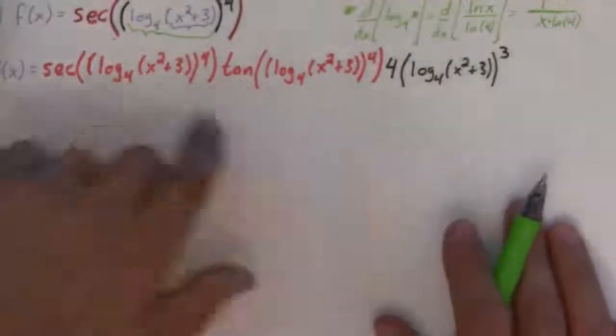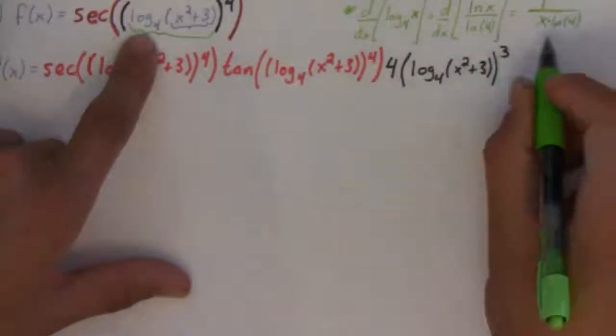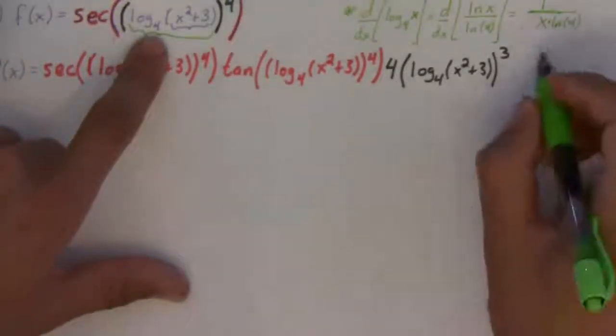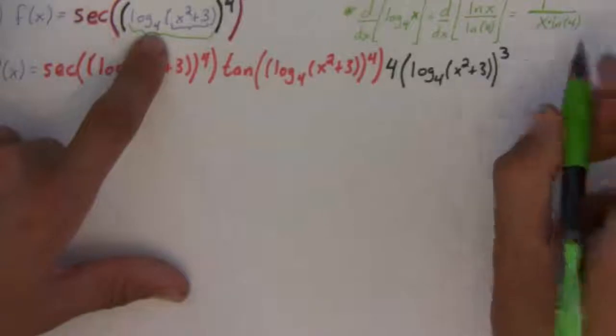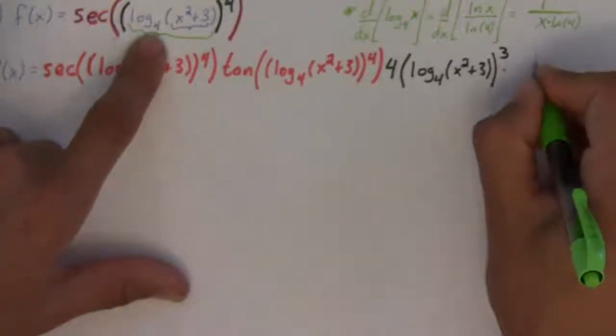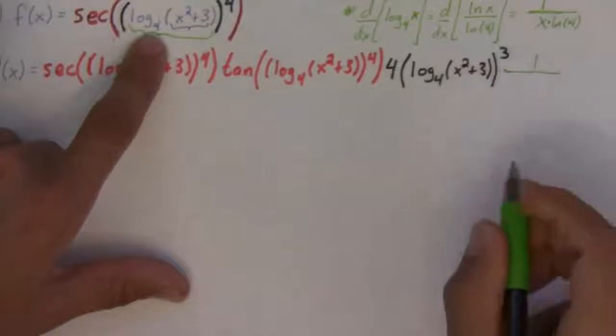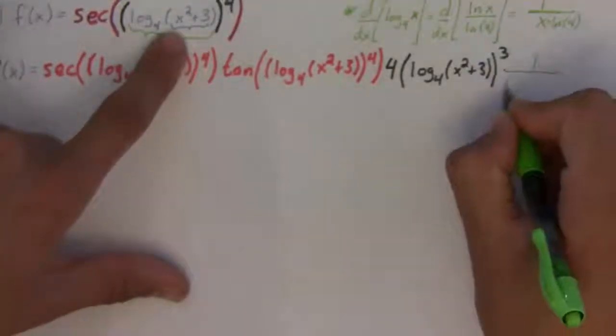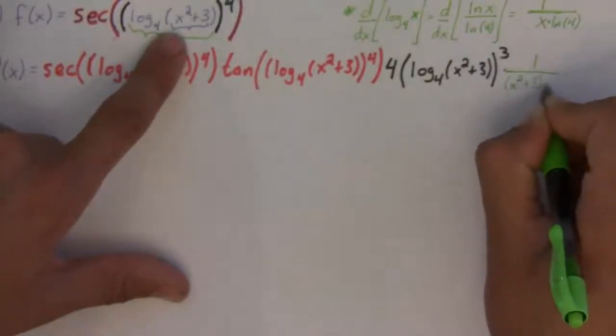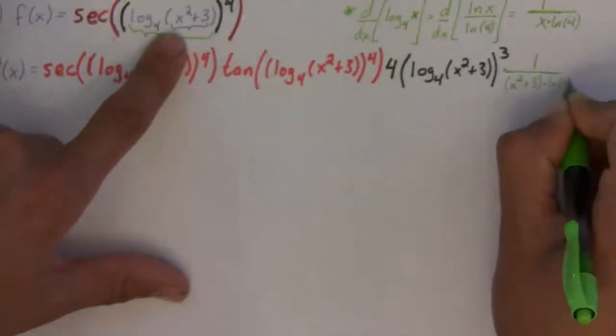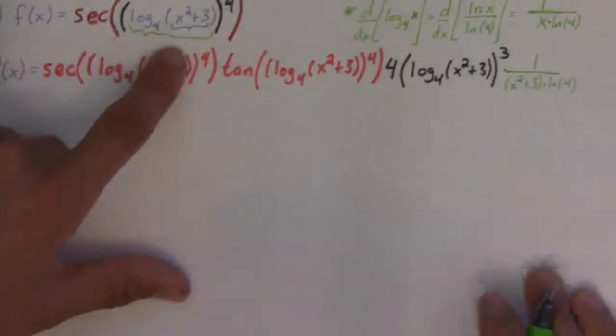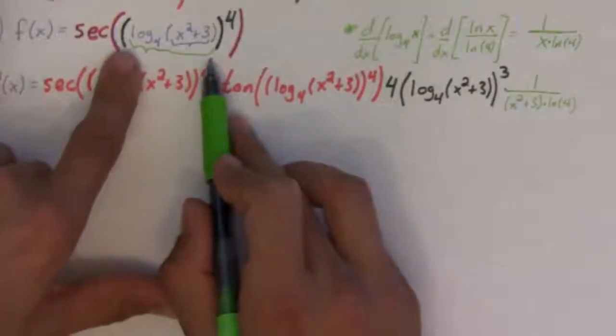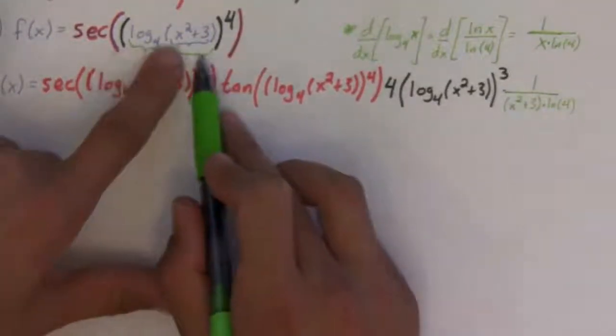Okay. We move one step in. And, so, we're going to have the derivative of log base 4. Well, we just talked about that right here. It's the derivative of log base 4. This is 1 over. Instead of x, though, we have the inside. So, 1 over x squared plus 3. And, then on the denominator, natural log of 4. Okay. So, here, that's the green level.